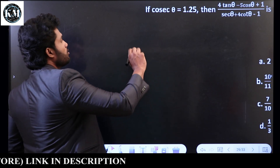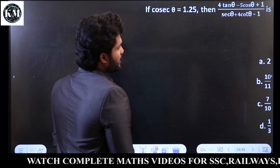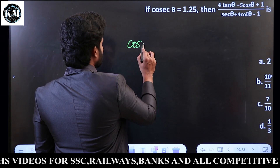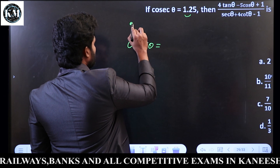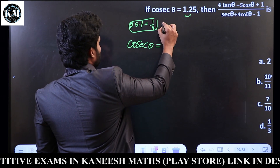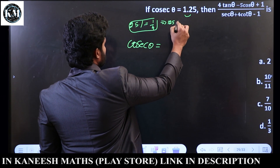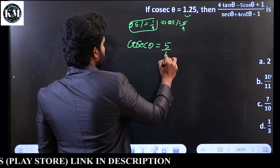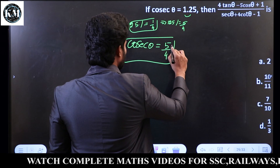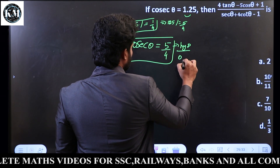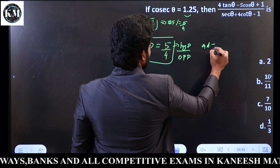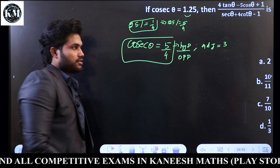If cosecant θ is equal to 1.25, then find: 4 tan θ minus 5 cos θ plus 1, divided by sec θ plus 4 cos θ minus 1. Now 1.25 equals 5 by 4, so cosecant θ = 5 by 4. And 4, 5 are Pythagorean triplets — so the third side is 3.